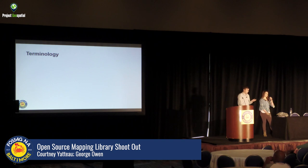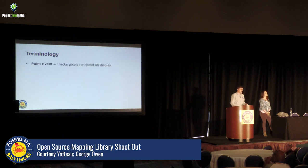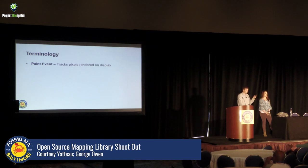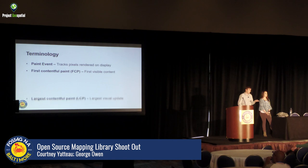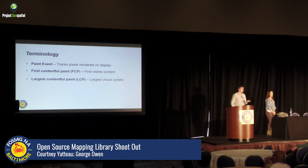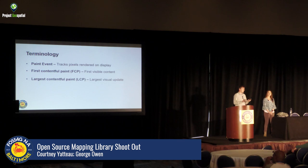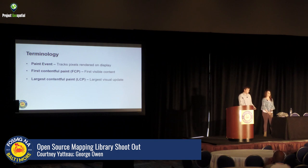Let's define some terminology before jumping into the data charts. We're looking at browser paint events when tracking performance with Puppeteer, since painting is the main bottleneck for drawing maps. A paint event tracks when pixels are rendered to your display — essentially a command to your GPU to draw something. First Contentful Paint (FCP) is when the first data a user can see appears on screen — for mapping libraries this is often the zoom buttons. Largest Contentful Paint (LCP) is when the largest visual update occurs, usually when the bulk of the map data gets rendered.